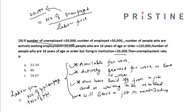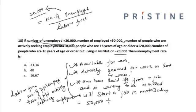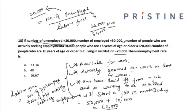So the labor force equals number of people employed plus number of people actively seeking employment, which is 50,000 plus 10,000, giving a labor force of 60,000. Putting the values into the equation, the unemployment rate is 20,000 divided by 60,000 into 100, which equals 33.34 percent. Hence the correct option is option A.